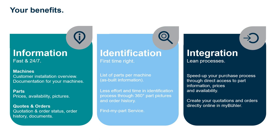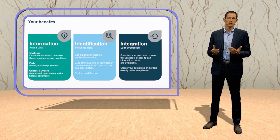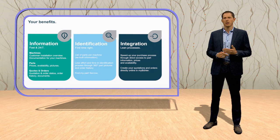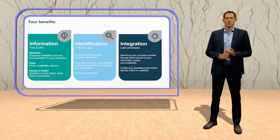myBühler makes it easy to do business with us. Your three main advantages are information, identification and integration. Information means you get 24/7 fast and easy access to your machines, your machine documentation, all the parts, availability of the parts, as well as all the quotations and your orders. For example, if you want to know where your order is at the moment, you can just go to myBühler and get access to the order tracking and tracing.